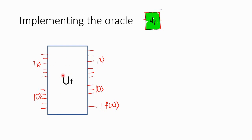Every program or algorithm or pseudocode, at the end, gets converted into a circuit in a classical computer. Just like that it will end up converted into a quantum circuit here. And that is one output here.